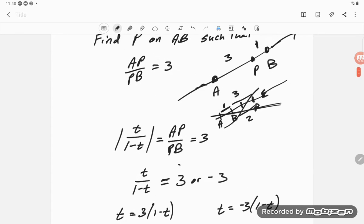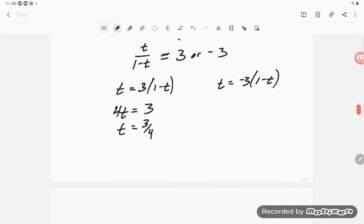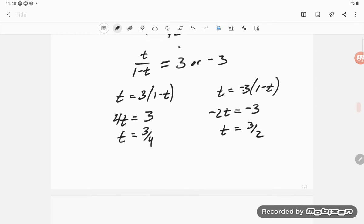And then here we get negative 3 times negative t is positive 3, but then we bring it over. We also have t is equal to negative 3 times 1 minus t. We get negative 2t is equal to negative 3. And so t is equal to 3/2. Okay.